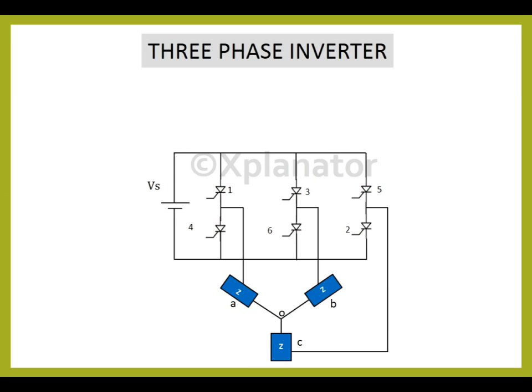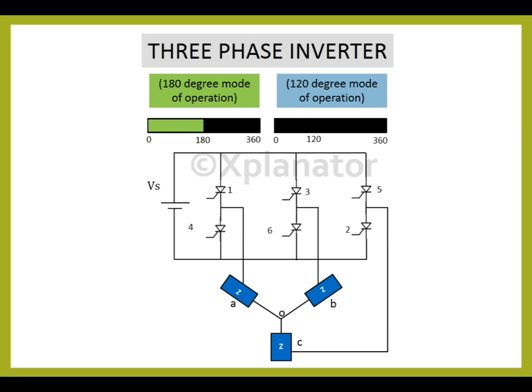Now, there are two possible patterns for working based on the time length of the gating switches. First, 180 degree conduction in which each thyristor remains in ON position for 180 degrees and second, 120 degree conduction in which each thyristor conducts for 120 degrees. In this session, we will study the 120 degree mode of operation.